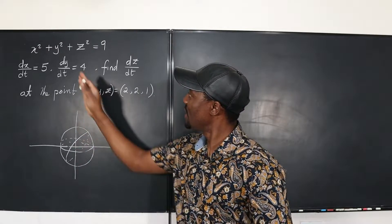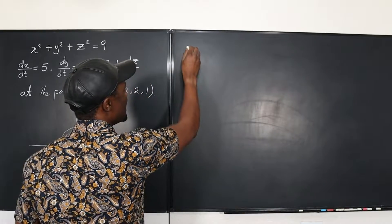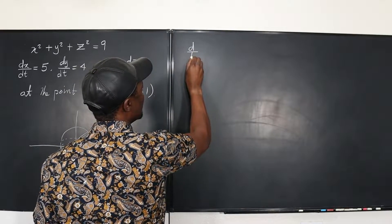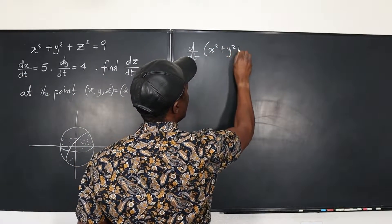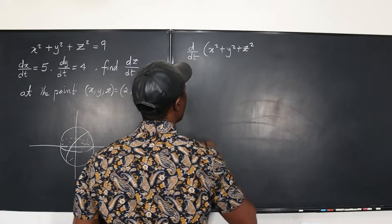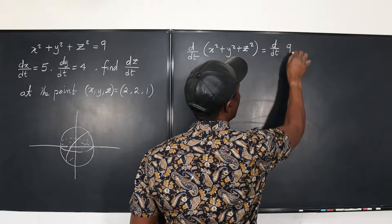Let's get into it. So the first thing you want to do is just take the derivative of both sides with respect to t. So we're going to say d/dt of the left-hand side, which is x squared plus y squared plus z squared, will be equal to d/dt of 9.